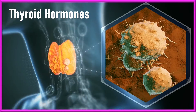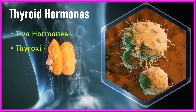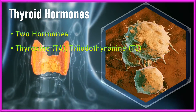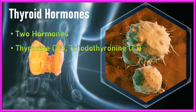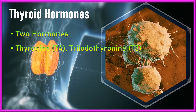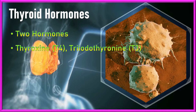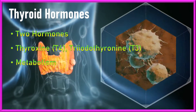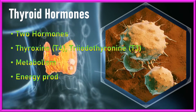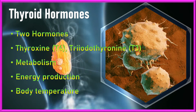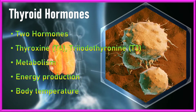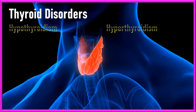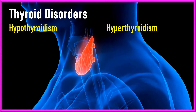The thyroid produces two main hormones: thyroxine, usually denoted as T4, and triiodothyronine, usually denoted as T3. These hormones are involved in the regulation of metabolism, energy production, body temperature, and other critical bodily functions.